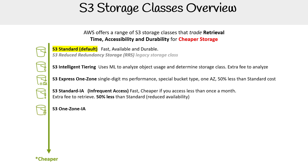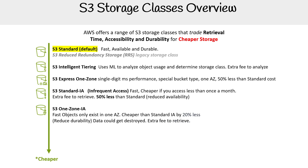You have S3 One Zone IA, which operates only in a single availability zone — similar to Express One Zone — but it's also infrequent access. It's even cheaper than Standard IA by 20%, but it has reduced durability, so your data could get destroyed. Make sure it makes sense for the type of files you have, and there is, of course, an extra fee to retrieve.